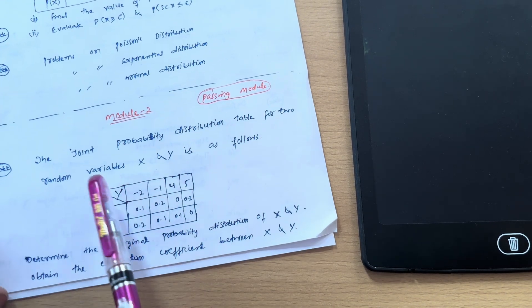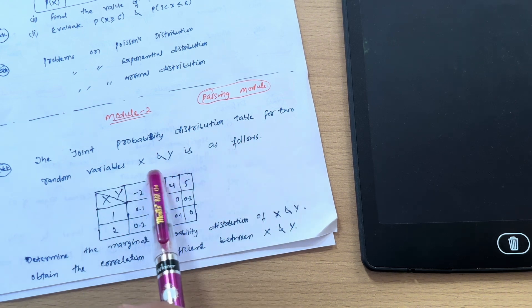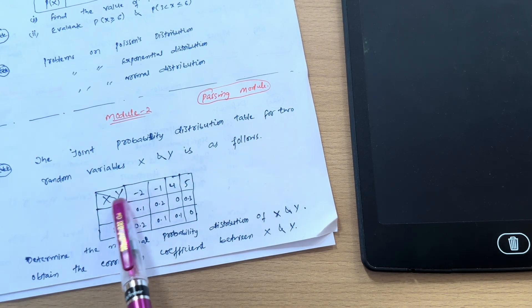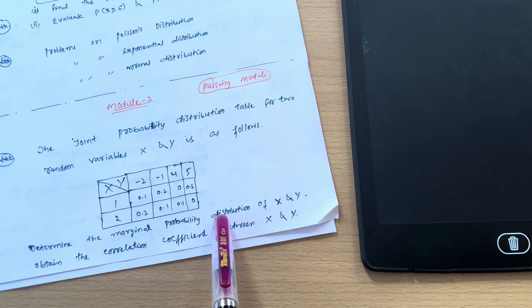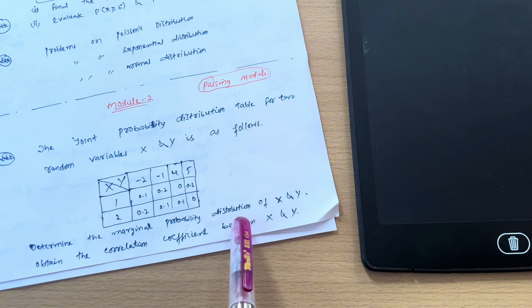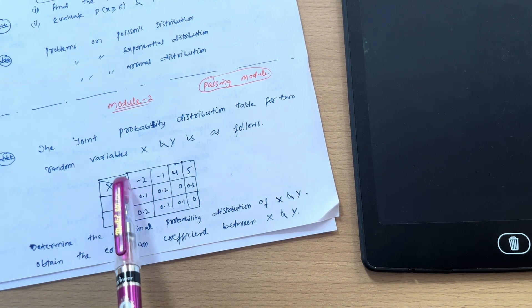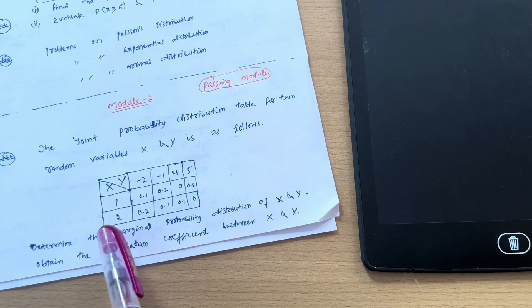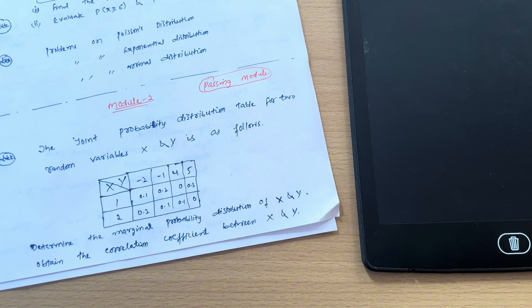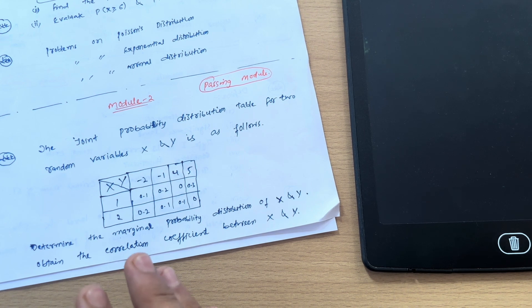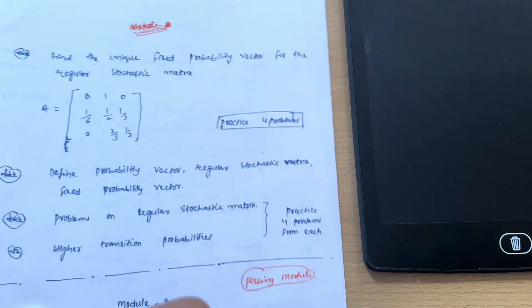Now I will discuss Module 2, which is a passing module where simple varieties are there, like joint probability distribution table for two random variables X and Y. Two values will be given for X and Y, so you have to determine the marginal probability distribution of X and Y, obtain the correlation coefficient between X and Y, and also calculate the expectation of X and expectation of Y. These are all the important points which you have to find out in this particular joint probability distribution. It's a very simple question—seven or six marks question it will be in the examination.